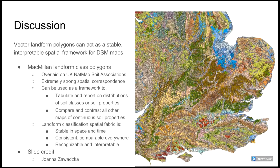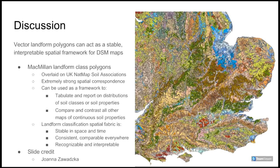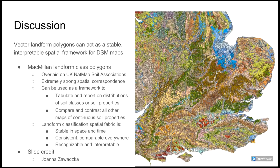This slide is included to provide an illustration of the landform class polygons portrayed at the scale of 1:500,000 that they were designed to be used at. Most of the example images in this presentation have been at a scale of 1:1 million or greater in order to provide a synoptic overview and to illustrate areas of greater aerial extent. We are confident that the polygon density and minimum size area associated with these polygons are appropriate for display and use at 1:500,000 scale.